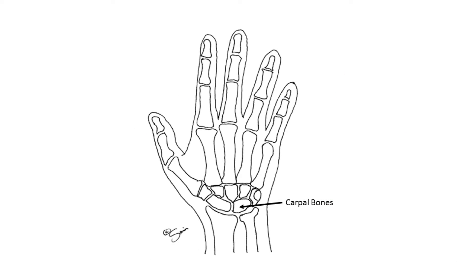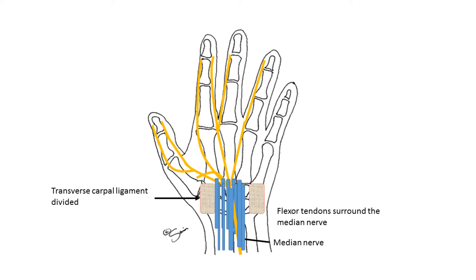The tunnel is formed by the eight carpal bones and a hood called the transverse carpal ligament, also known as the flexor retinaculum. Inside this space, the nerve is surrounded by eight flexor tendons, which pull your fingers in towards the palm. As it's a tight and crowded space, the nerve, which is delicate, can be squashed against the surrounding tendons.